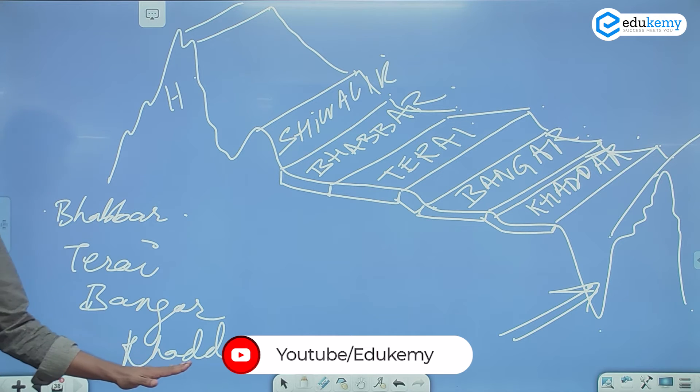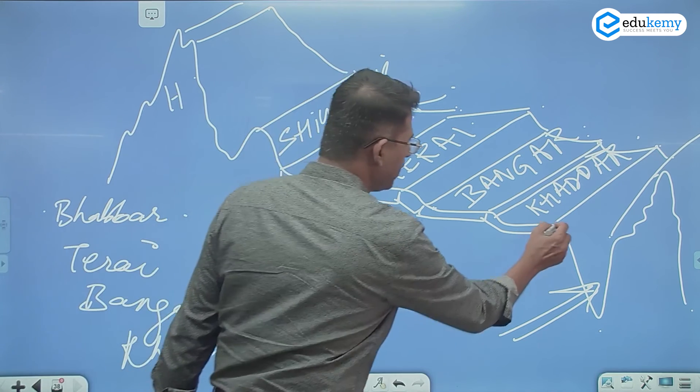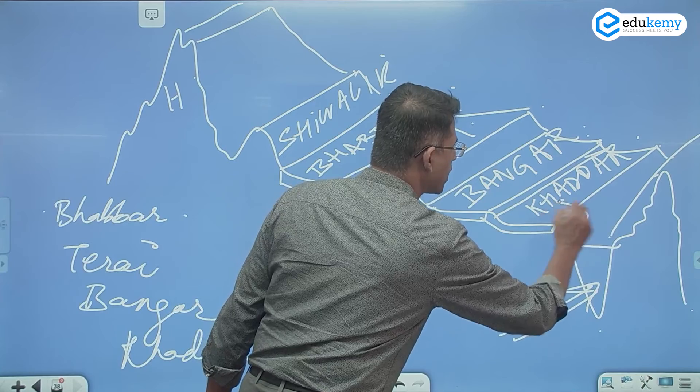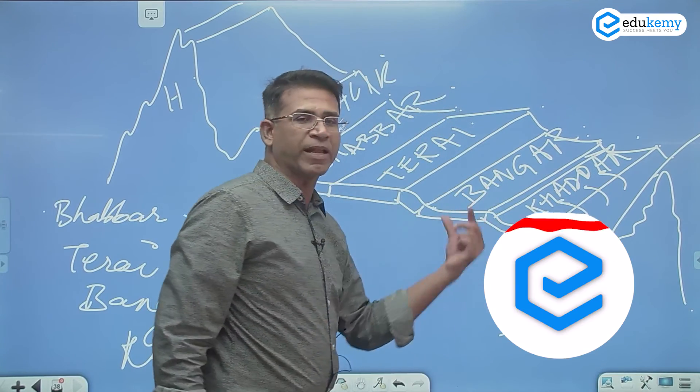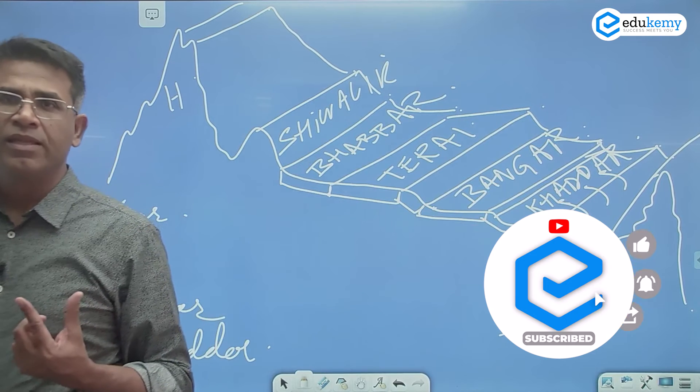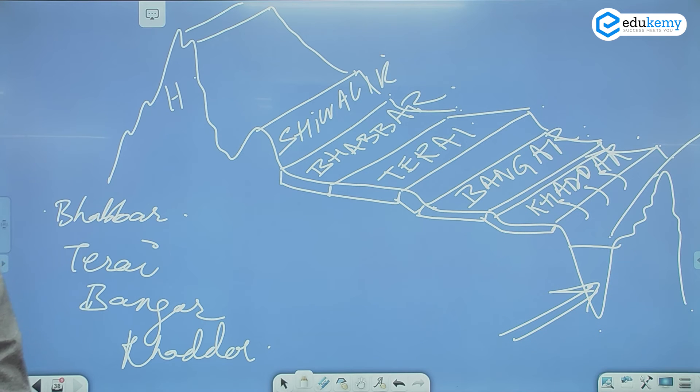Khadar plains. The Khadar plains are the active flood plains. This is the active flood plains. They have the finest soil and they have the most fertile soil. Most important for agriculture.